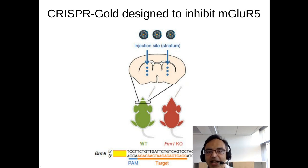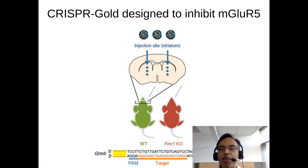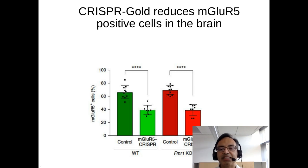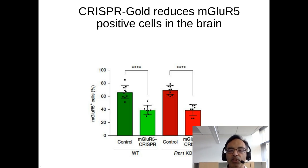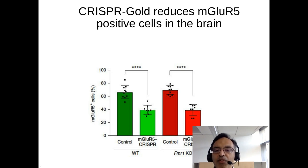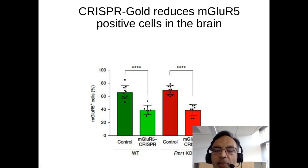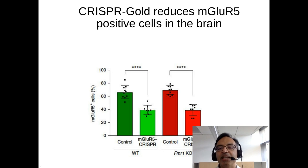It is also known that the MGLU-R5 signaling pathway is over-activated in patients with Fragile X-related autism. We investigated if we could treat this by knocking out MGLU-R5 in the FMR1 knockout mouse model. We made CRISPR-GOLD designed to knock out MGLU-R5, sent it to Hay-Young's lab, and she injected it into FMR1 knockout or wild-type mice, then looked for knockdown of MGLU-R5 via immunohistochemistry. The number of MGLU-R5-positive cells dramatically decreased after treatment with CRISPR-GOLD — from 60% down to about 35% in wild-type mice, with similar numbers in FMR1 knockout mice.